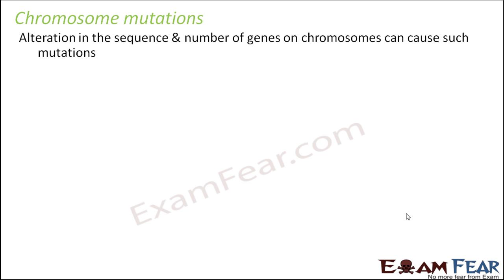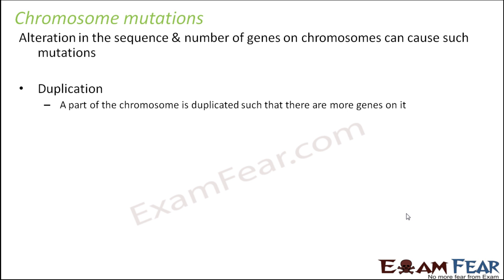Now let us look at chromosomal mutations. Whenever there is a change in the sequence or number of genes on chromosomes, this type of mutation can occur. Whenever the chromosome structure changes or the number of chromosomes changes, the sequence and number of genes will also change, because chromosomes contain the genes — genes are located on chromosomes. This can happen by many different ways.